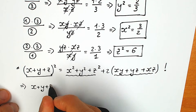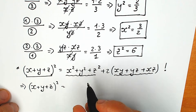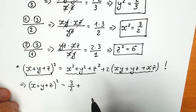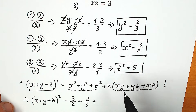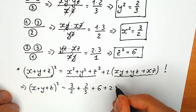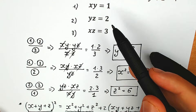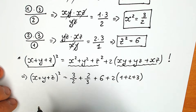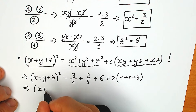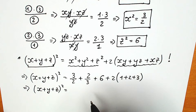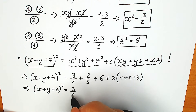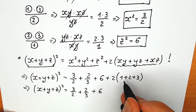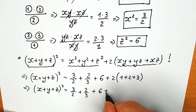So x plus y plus z, all squared, equals x squared which is 3/2, plus y squared which is 2/3, plus z squared which is 6, plus 2 times (xy plus yz plus xz), which is 2 times (1 plus 2 plus 3). Let's simplify step by step. We have x plus y plus z squared equals 3/2 plus 2/3 plus 6 plus 2 times 6, which gives plus 12.